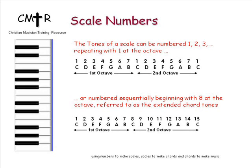When playing scales, you usually think in octaves and number the tones from one to seven and then repeat them. When using the scale to make chords, you think sequentially, and that produces the extended harmonies — the nine, the eleven, and thirteen. Note that the notes in the scale don't change, but the function does.